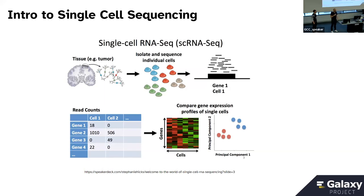Single cell is used very often for identifying cellular subtypes. It's a pretty common experiment and gets fairly high use on Galaxy. Very often you'll see it used in drug design experiments where you're trying to determine a drug effect across a variety of cell types, or if you're trying to determine changes in a tumor microenvironment.